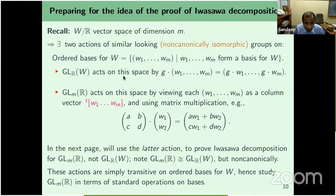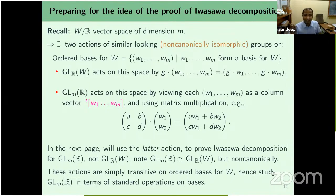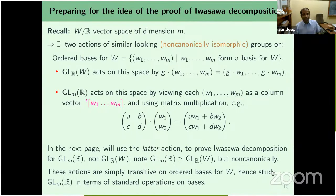In GLₙ(R), diagonal matrices diag(A₁, …, Aₙ) simply scale the basis vectors: Wᵢ ↦ AᵢWᵢ. The orthogonal group K = Oₙ(R) consists of those elements taking one orthonormal basis (for a chosen inner product) to another orthonormal basis. We can study different subgroups of GLₙ(R) in terms of their action on bases, and we will use this in the proof of the Iwasawa decomposition.